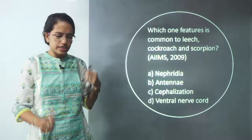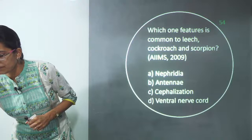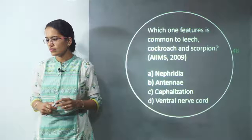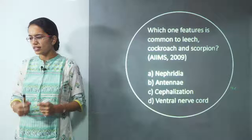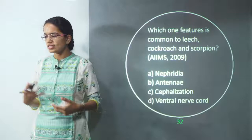The next question was asked in AIIMS 2009: what are the common features of leech, cockroach, and scorpion? The buzzer is on — looking forward for a correct answer.